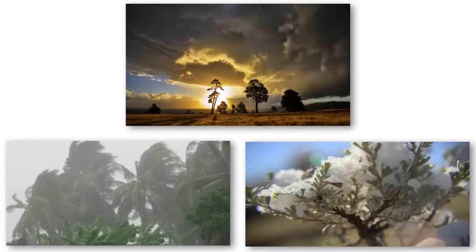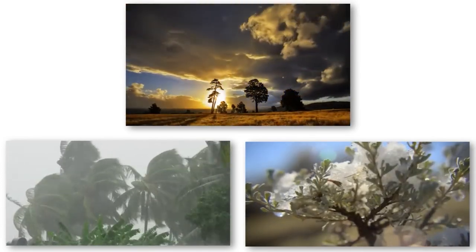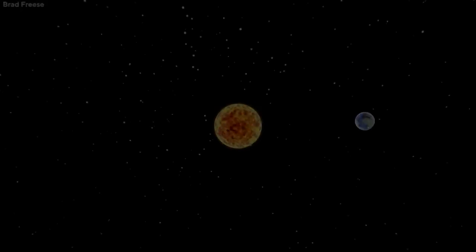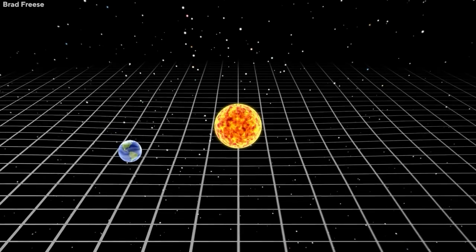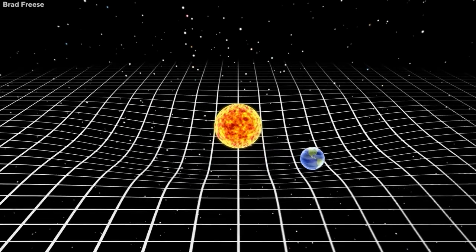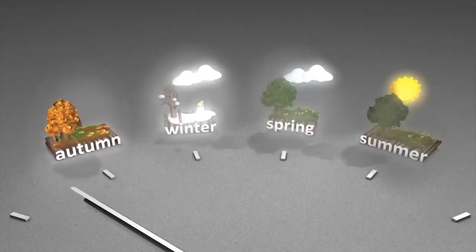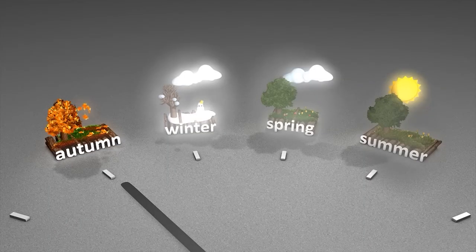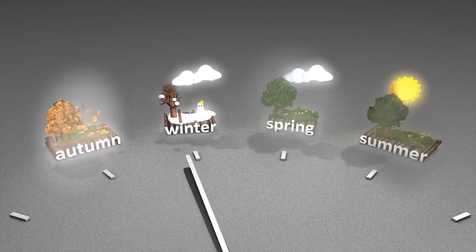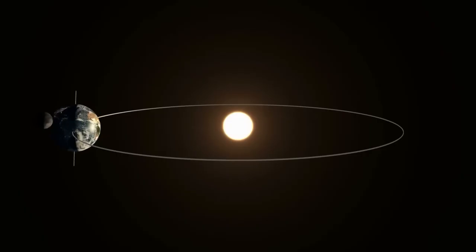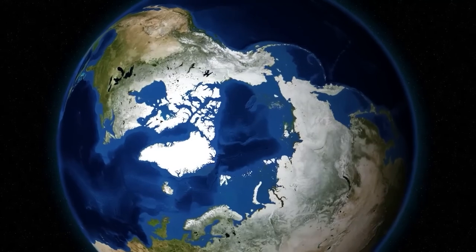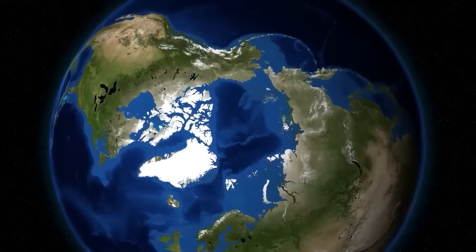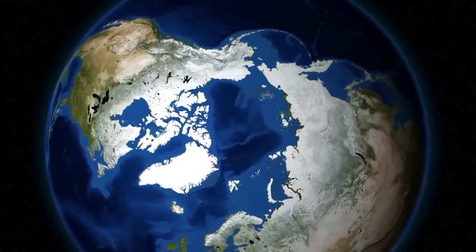If Earth did not tilt at all and instead orbited the sun exactly upright, there would only be minor variations in temperature throughout the year as Earth moved slightly closer and then farther from the sun. There would also be temperature differences from the equator to the poles. But without Earth's tilt, we wouldn't have wonderful seasonal changes and our associations with the different times of the year.